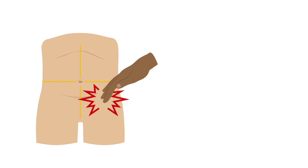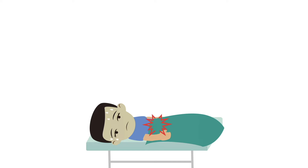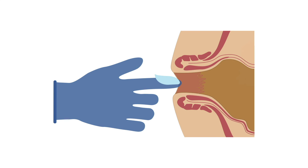On palpation, the patient may have left lower quadrant pain and a tender mass may be present. Patients may also have right lower quadrant or suprapubic pain due to the presence of a redundant inflamed sigmoid colon or right-sided cecal diverticulitis. Patients may have localized peritoneal signs with localized guarding, rigidity, and rebound tenderness. A digital rectal exam should be performed; it may reveal a mass or tenderness to palpation in the presence of a distal sigmoid abscess.